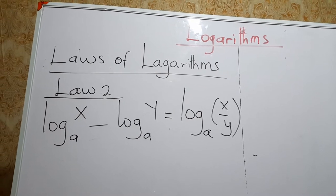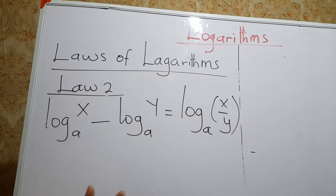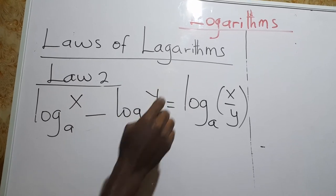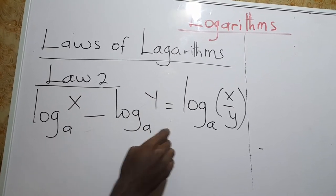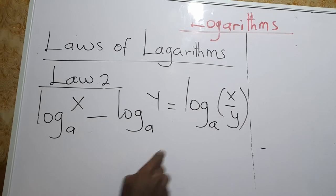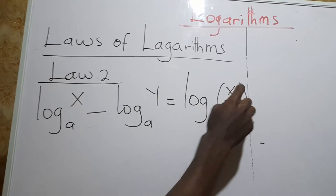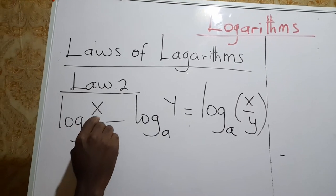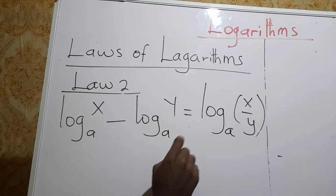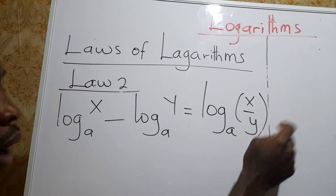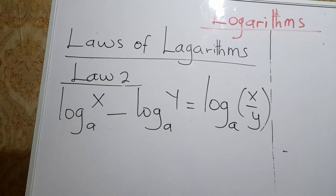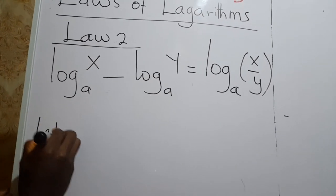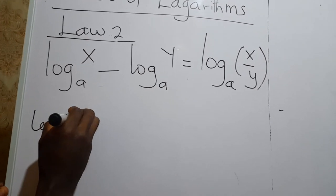The second law of logarithms says that log x base a minus log y base a equals log(x/y) base a — when two logs are subtracted with the same base, we repeat the base and divide the numbers. Let's prove why this is so. Using the same approach as the first law, we let log x base a equal p, so x equals a exponent p.